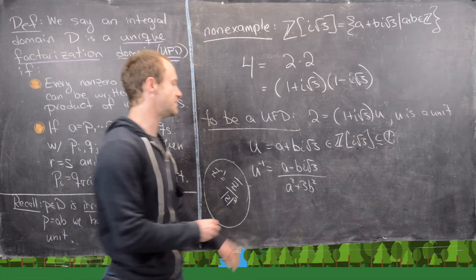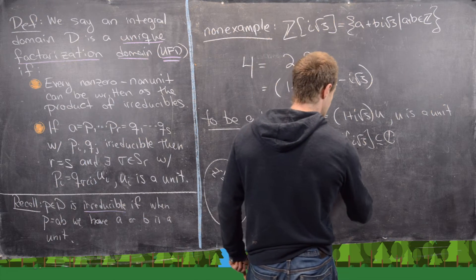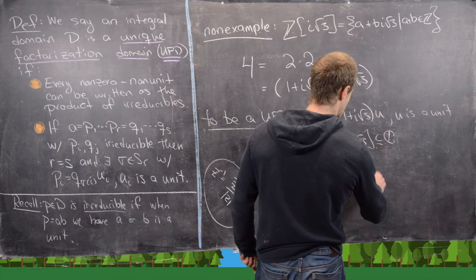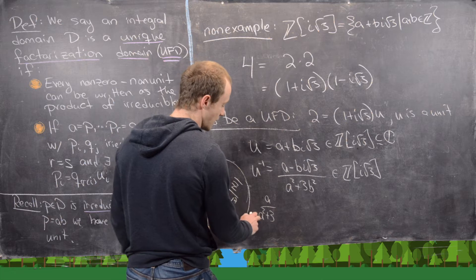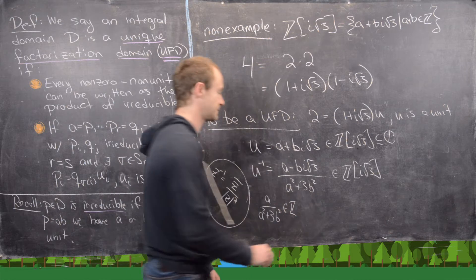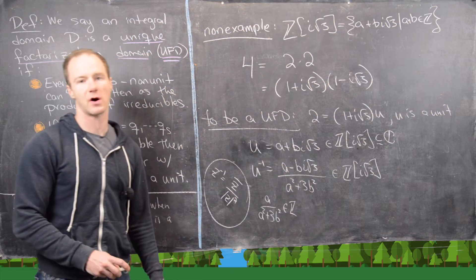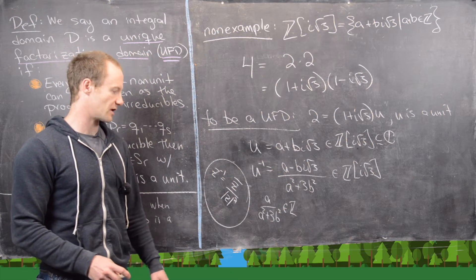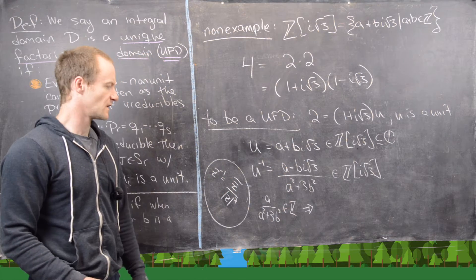In order for this to be inside of Z adjoin I root 3, then we'll need A over A squared plus 3B squared to be an integer. Because notice that's the real part of this. And we need the real part of this to be an integer.